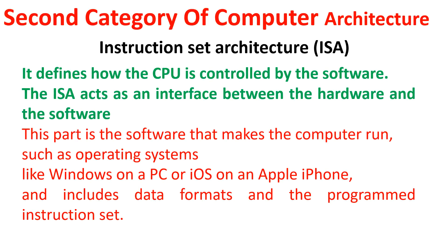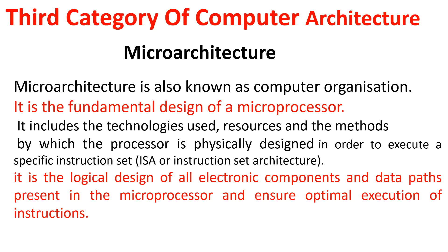The second category is Instruction Set Architecture. It defines how the software controls the CPU, and it acts as a bridge between the hardware and software of the computer system. ISA is the software that makes the computer run, such as an operating system — Windows on a PC, iOS on an Apple iPhone. It also includes data formats and the programmed instruction set.